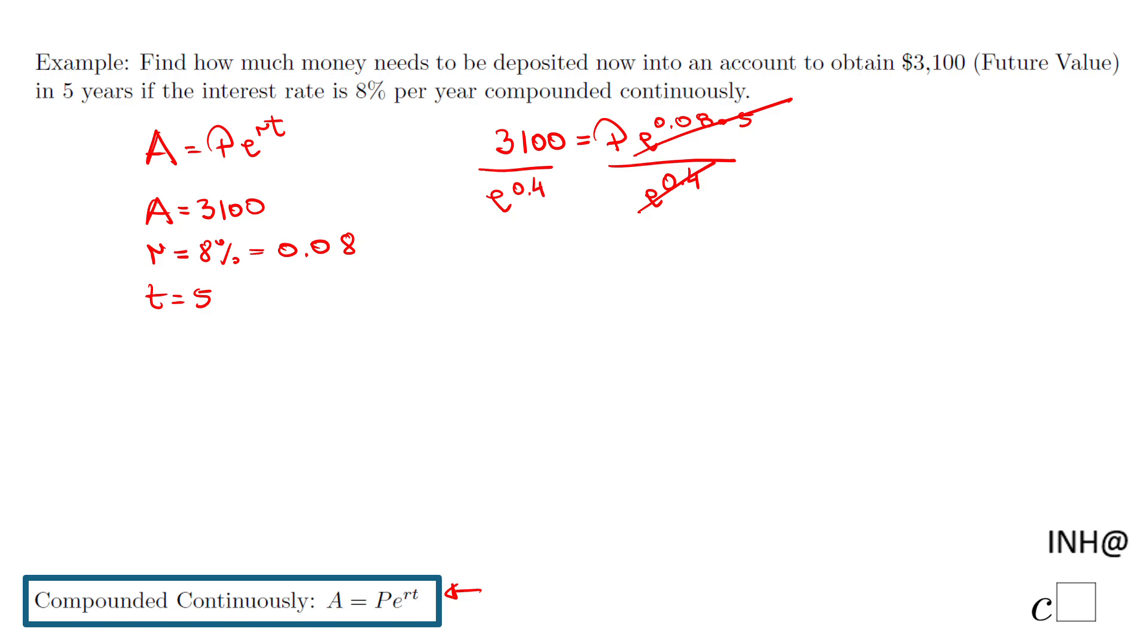3,100 divided by E to the power of 0.4, and I end up with this value. P equals 2,077.99. I rounded it to the nearest penny, the nearest cent.